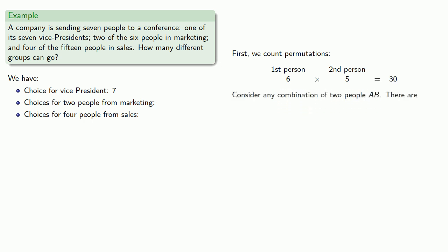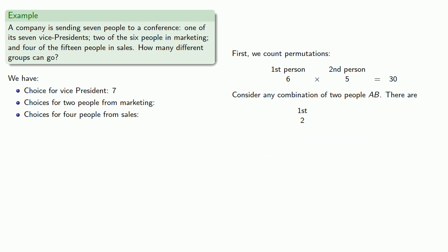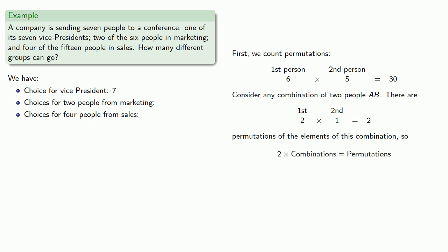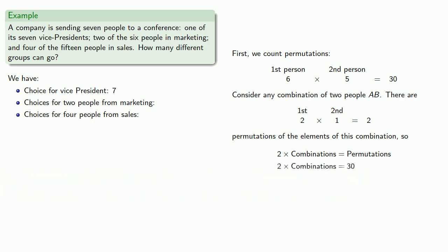Now consider any combination of two people, a and b. There are two ways we could have picked the first person and one way we could have picked the second, so there are two permutations of the elements of this combination. Therefore, two times the number of combinations gives us the number of permutations, meaning the number of combinations is 15. So we have 15 ways of choosing two people from marketing.